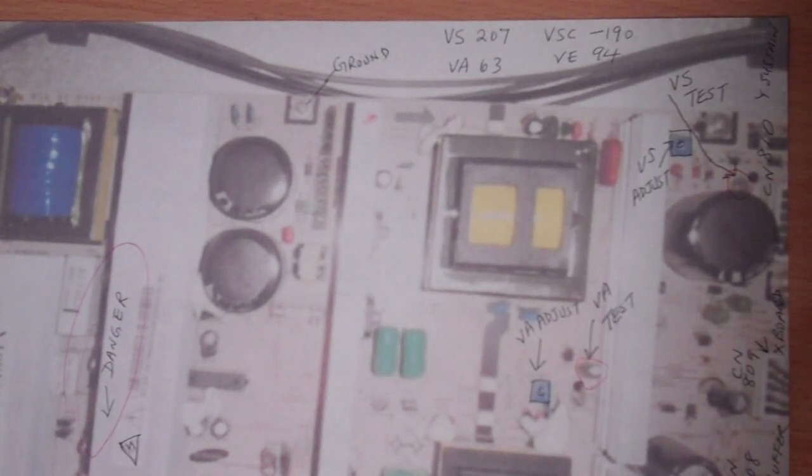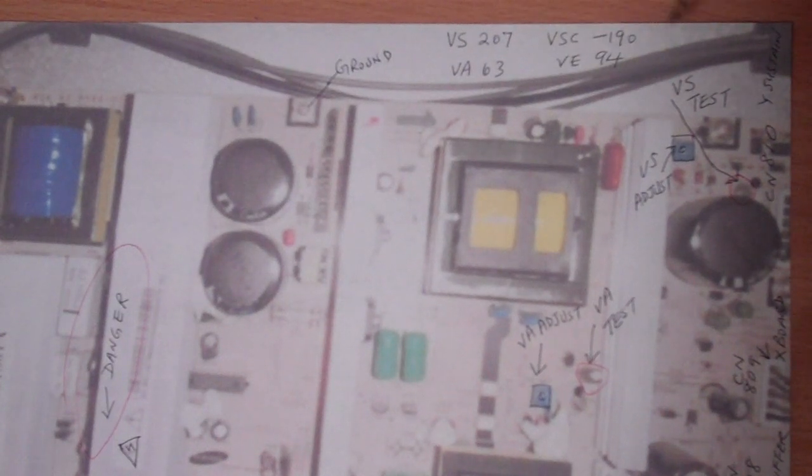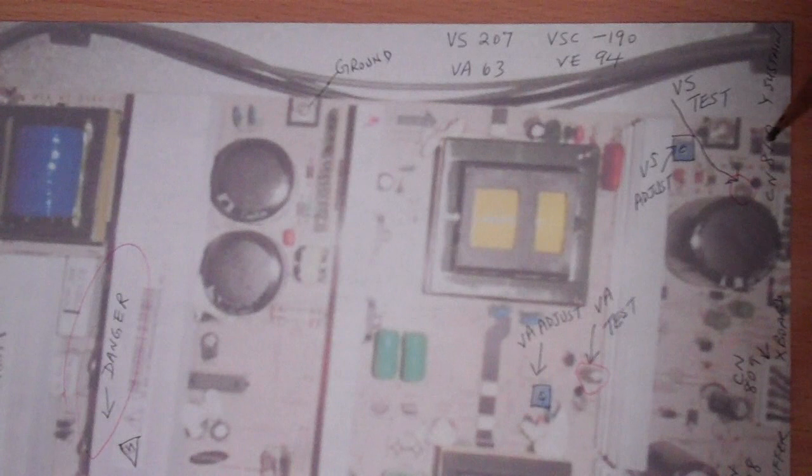When you take your back cover off, you can see the power supply board in the middle, usually at the top. When the cover is off, the television is live and this is high voltage - like 200 volts, 190 volts - so it can kill you in an instant. If you don't know how to do this or don't know anything about electricity, it's better to get someone who knows what high voltage means and let them check it for you.